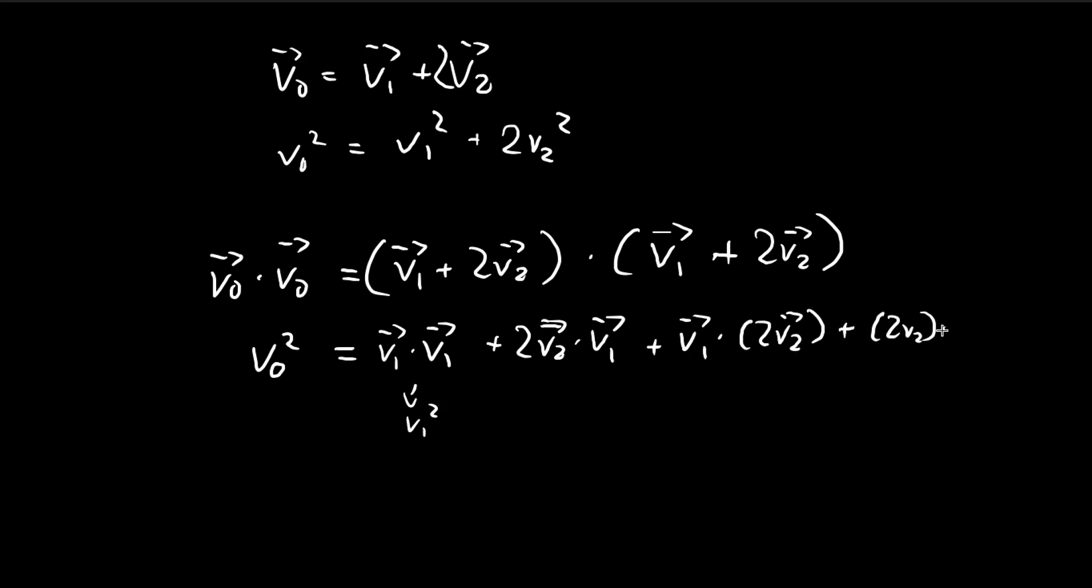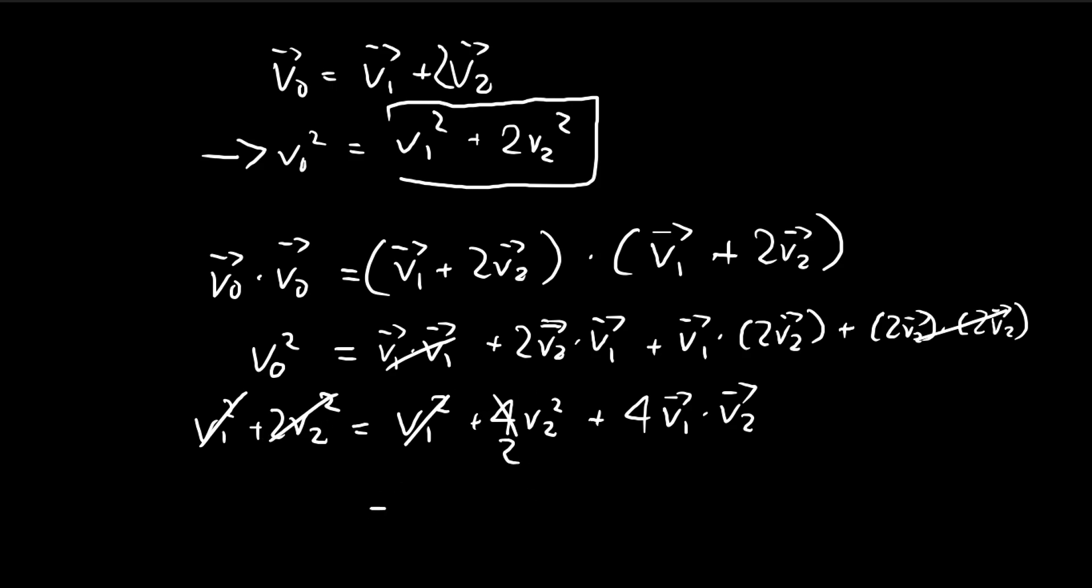In the end, this is just going to turn up to something like this: v1 squared plus 4v2 squared plus 4v1 dot v2. You can shift the order of the dot product. You might find some similarity with the expression we have over here, because both have v0 squared. We know this left-hand side is also equal to v1 squared plus 2v2 squared. Immediately you see we can cross these out, and for the 2v2 squared, we can get rid of two of them. In the end, we have 0 equals 2v2 squared plus 4v1 dot v2.